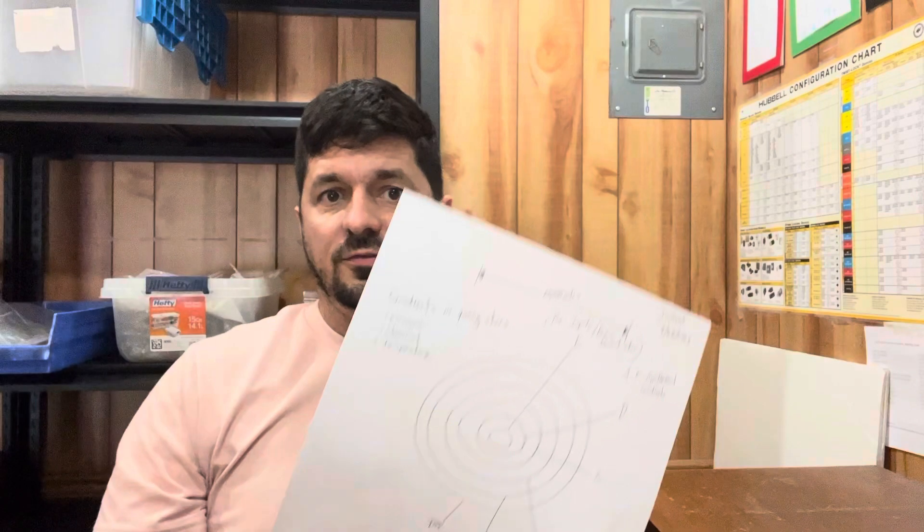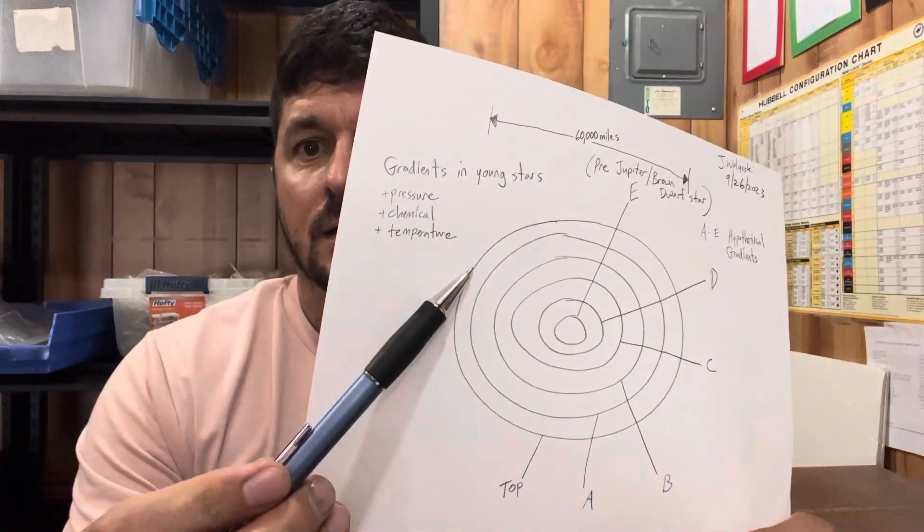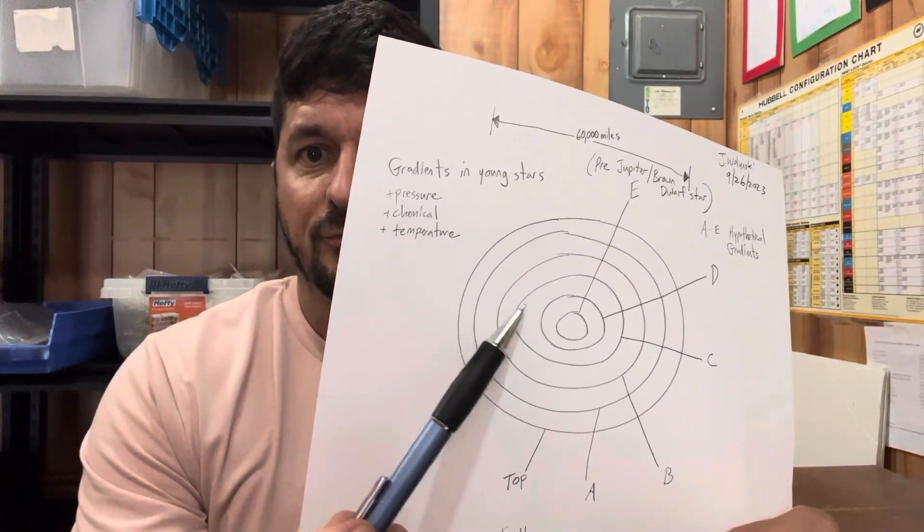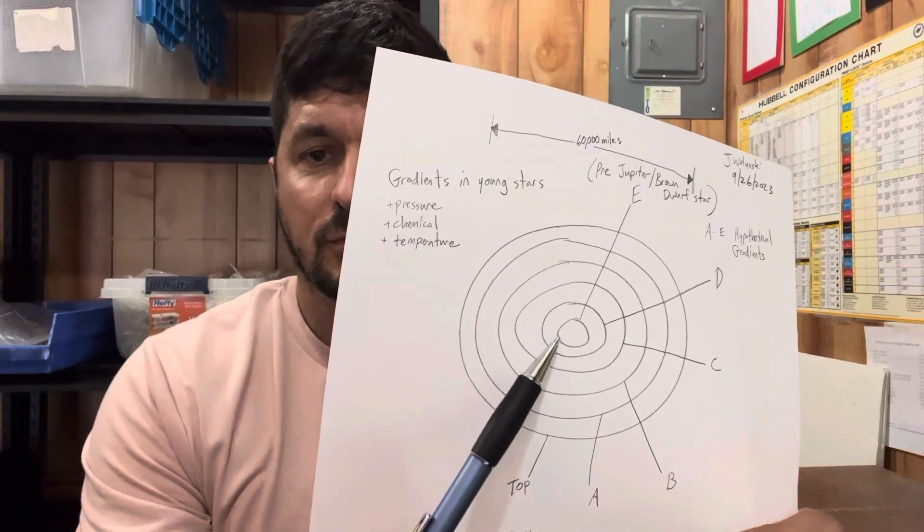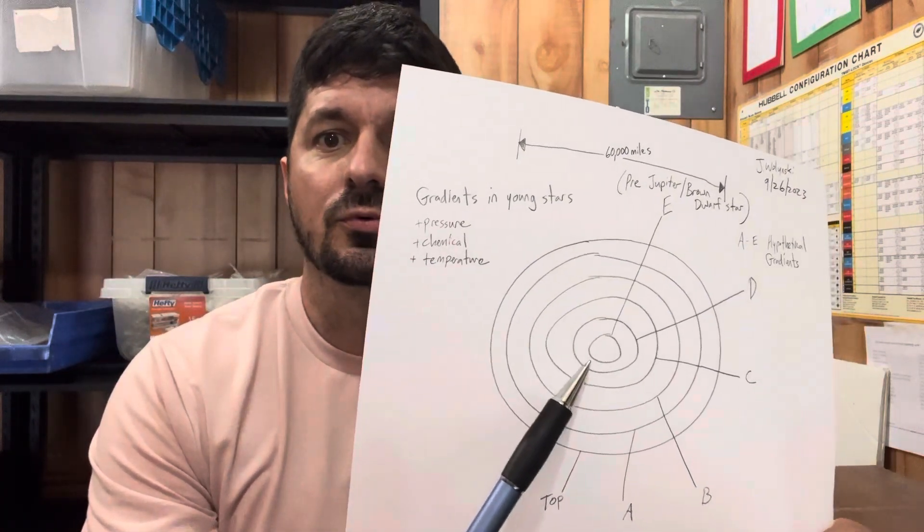This object collapses on itself, which means the gradients that created the prebiotic molecules will disappear. So the evidence is gone - you can't see it on Earth as it is now. To figure out what the early Earth was like, you have to look at other younger stars. That's where origin of life researchers are completely lost and essentially clueless.